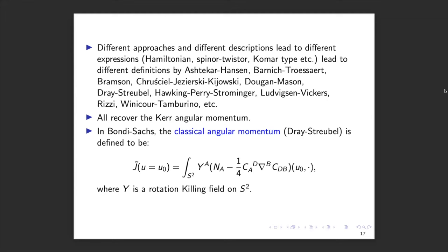There are different approaches using, for example, spinors or twistors. I have a partial list of different types of angular momentum defined since the 1960s. Almost all of them agree with the Kerr spacetime value. In Bondi-Sachs coordinates, almost all of them converge to what we call the classical angular momentum, first written down by Ashtekar and Streubel in the 1980s.